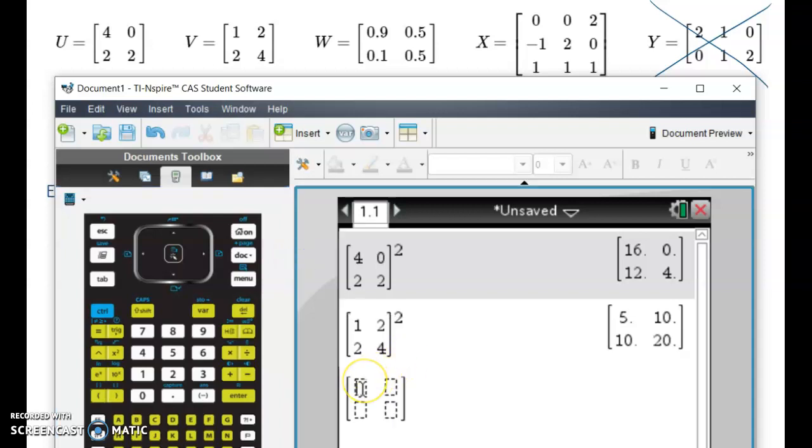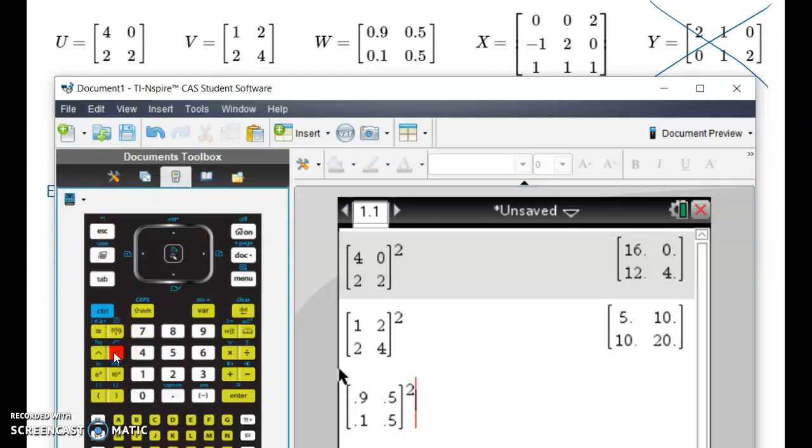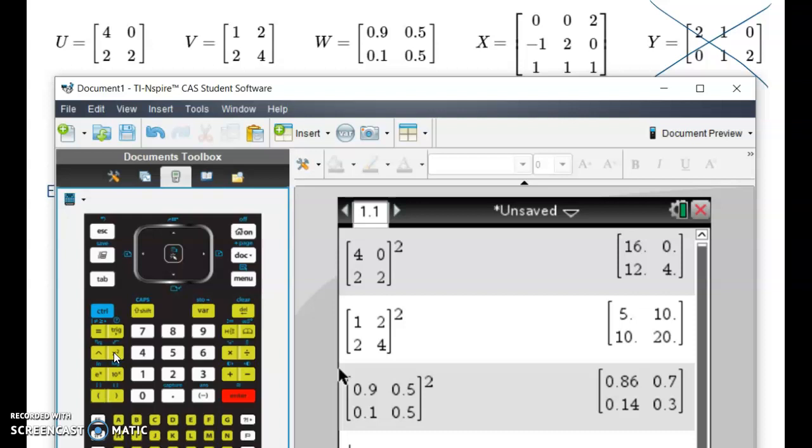We can square W. So let's quickly do that. Oh, it's decimal. So 0.9 tab, 0.5 tab, 0.1 tab, and 0.5. We hop out, we square it, hit enter, and we get our values.